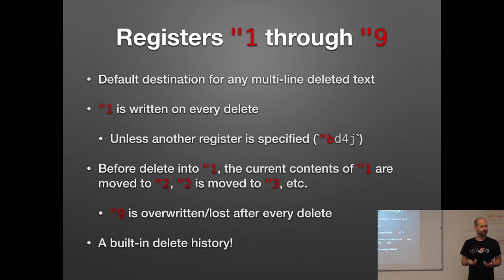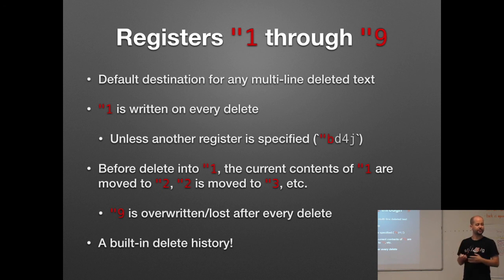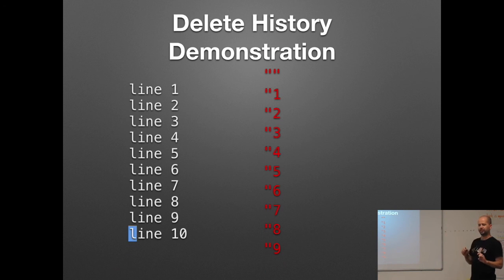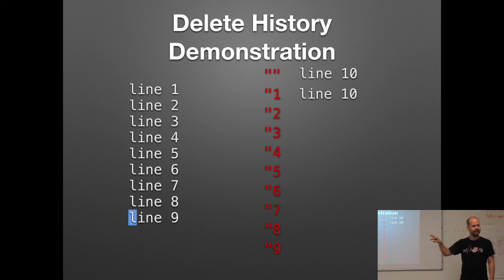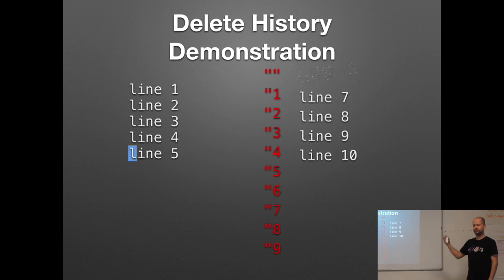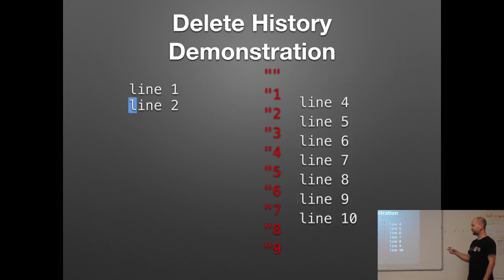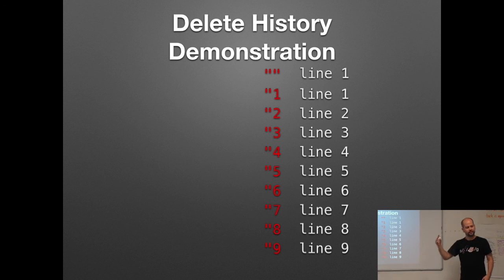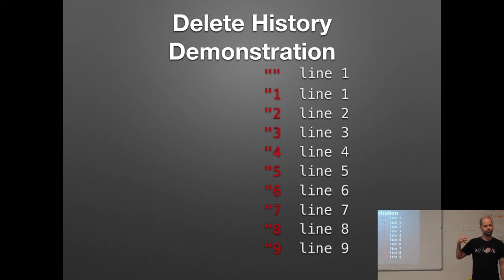If you delete one line here then another line over there and realize you wanted the first line, it's actually still in memory for a while. I did a little animation to demonstrate: delete line ten, it gets copied into register one and the unnamed register. Delete again, line ten moves to register two, line nine goes into register one. This keeps going until you hit register nine — when you delete something else, whatever was in nine gets pushed out into oblivion.